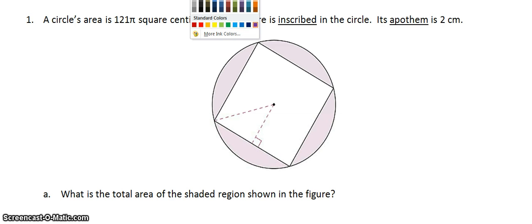Now we have the area of a shaded region. I have a shape inside another shape, which we said if there's a regular polygon inside a circle where all the vertices touch, it's called inscribed. Its apothem is 2 centimeters. The apothem of the square goes from the center to the midpoint of the opposite side. Now we need to find the total area of the shaded region.